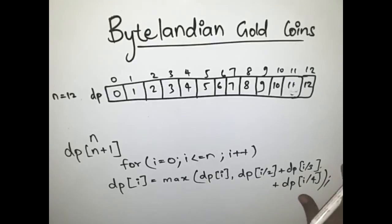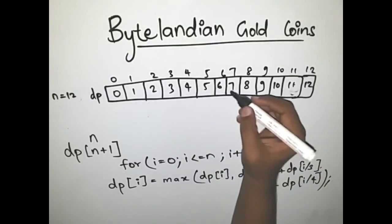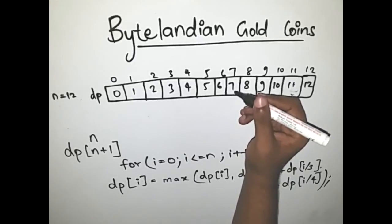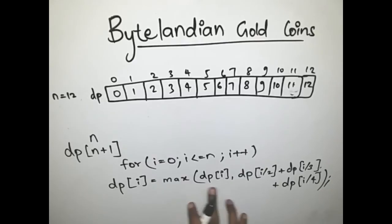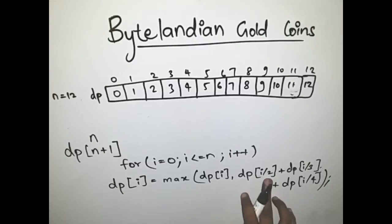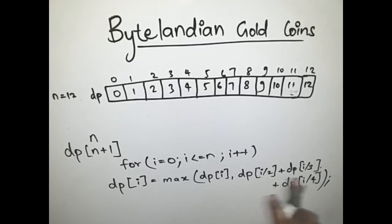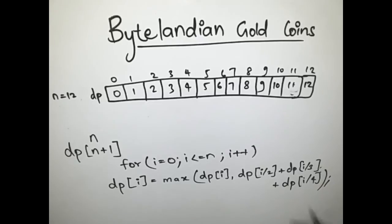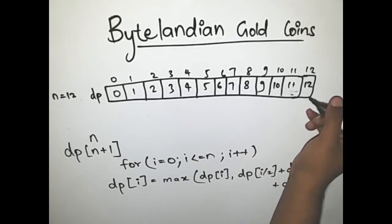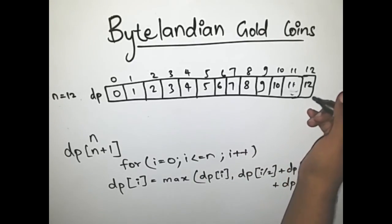If you continue like this, mostly you get the same number as the max. But let's look at i=7. dp[i] is 7, and dp[7/2] = dp[3] = 3, dp[7/3] = dp[2] = 2, dp[7/4] = dp[1] = 1, giving a sum of 6. So you choose between 7 and 6, and 7 wins — nothing has changed.